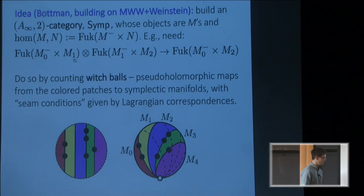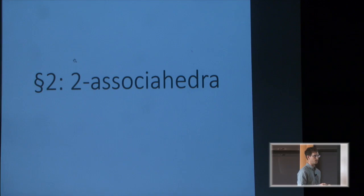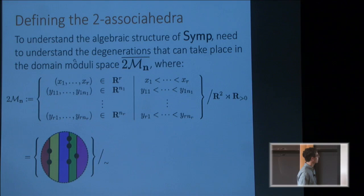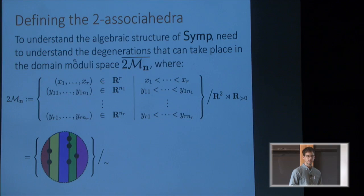So let me tell you about what I did last year. The first thing that you're going to need to do when you want to define a structure like this is understand what algebraic structure should result from these pseudo-holomorphic counts, just as the algebraic nature of the Fukaya category came from the degenerations that can occur inside of the moduli space of configurations of points on the boundary of a disk. So we need to understand what kind of degenerations can occur inside of the moduli space of these configurations of vertical lines and points. When I say moduli space, we're going to allow these vertical lines to move back and forth, and the points to move up and down on the lines. And we quotient out by positive dilation and translation.